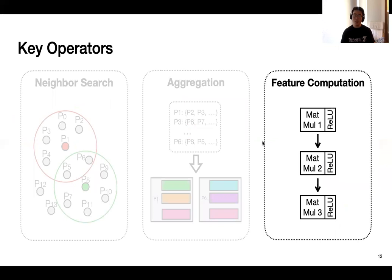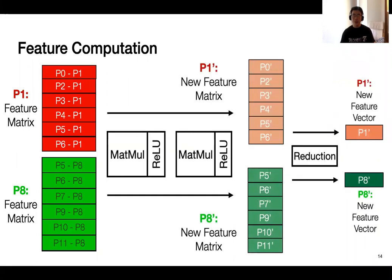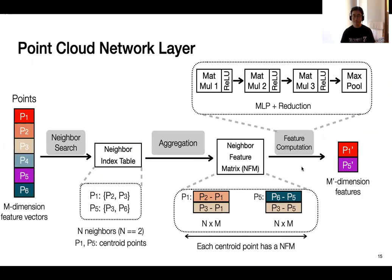Then we will have the feature matrix of P1. And this step is done for all the selected points here. And once we have all the feature matrices, next step is feature computation. So yes, all these feature matrices will be fed to the neural nets for feature computation. And note that this is done for all the vectors in the feature matrices. And once we have all the new feature matrices ready, they will be reduced to new feature vectors. And usually this reduction operation here is a max operation. So now, with all the three key operators, we can compose a point cloud network layer.